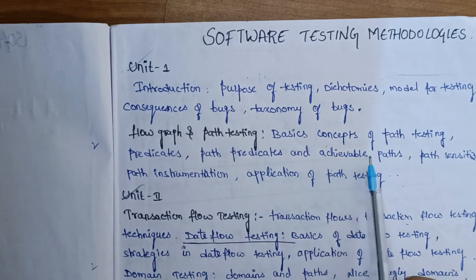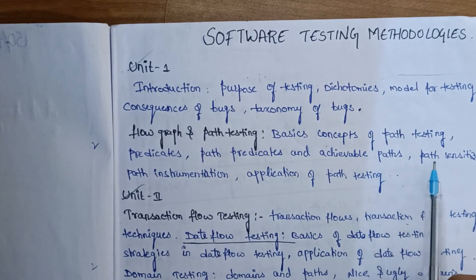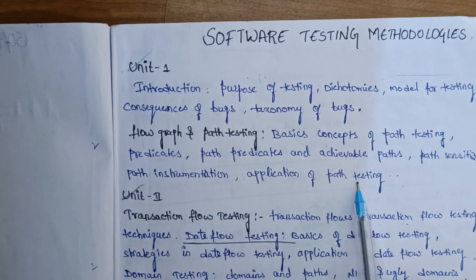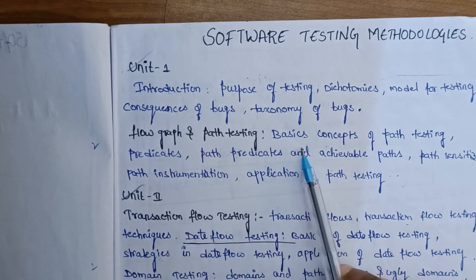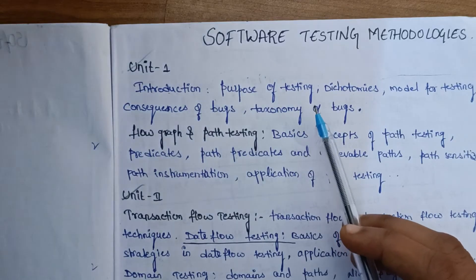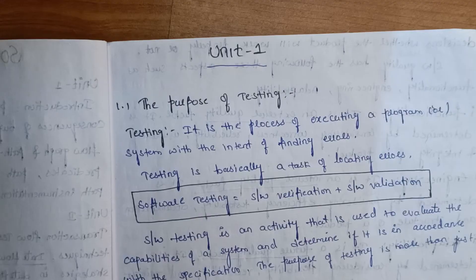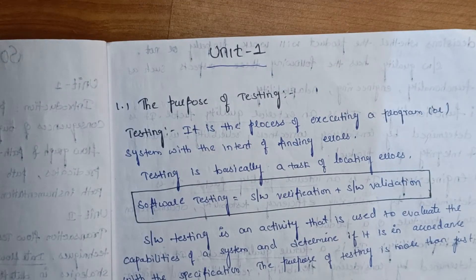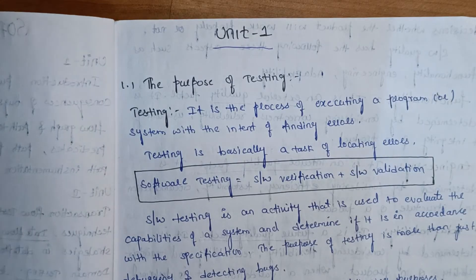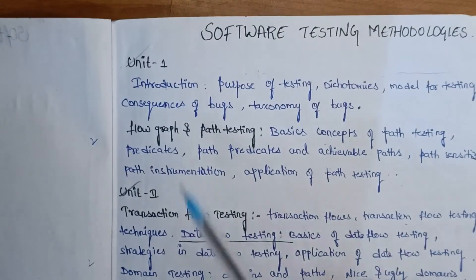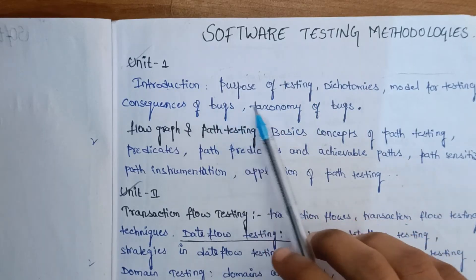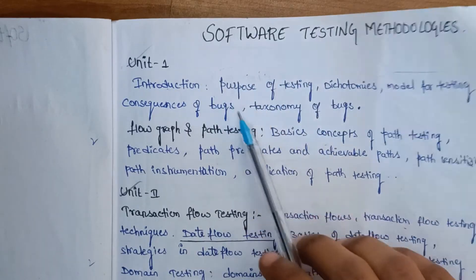Path Predicates and Achievable Paths, Path Sensitizing, Path Instructions, and Applications of Path Testing — this is the Unit 1 syllabus. I will start with the purpose of testing. We will choose the syllabus copy, and the first topic in the Introduction is the purpose of testing.